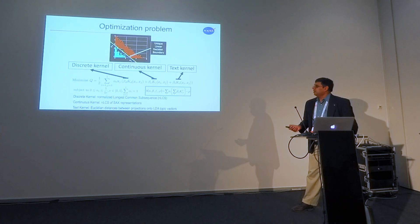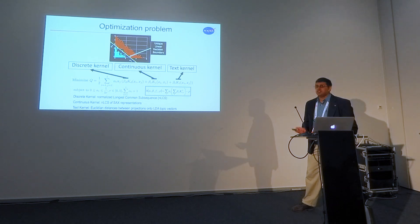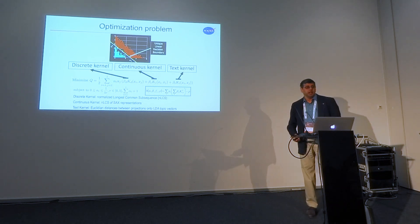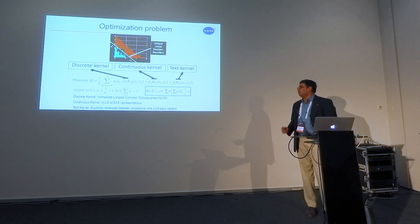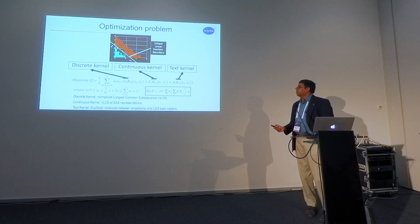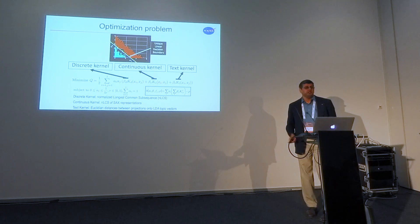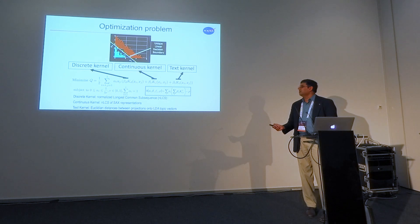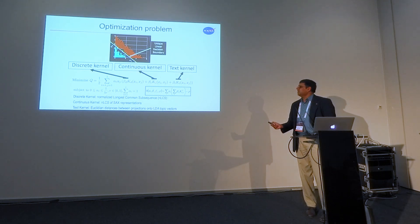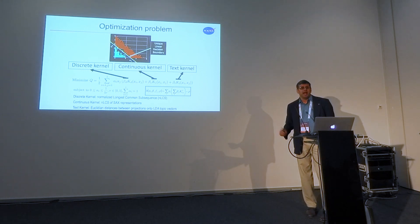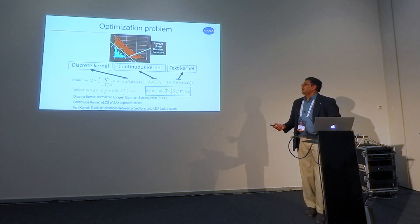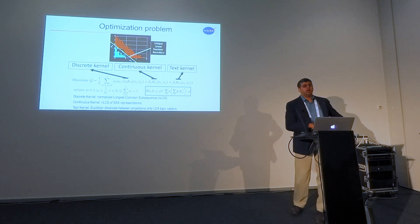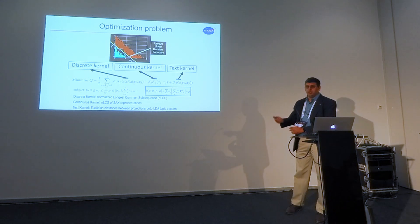Without dwelling too much on equations, this is essentially the formulation of the one-class support vector machine, and we're able to throw multiple kernels in here depending on the modalities of data available. We've worked with discrete and continuous for the FDM data, done a tiny bit with text from reports attached to flights, and were able to use the same underlying algorithm for the trajectory data with different kernels.